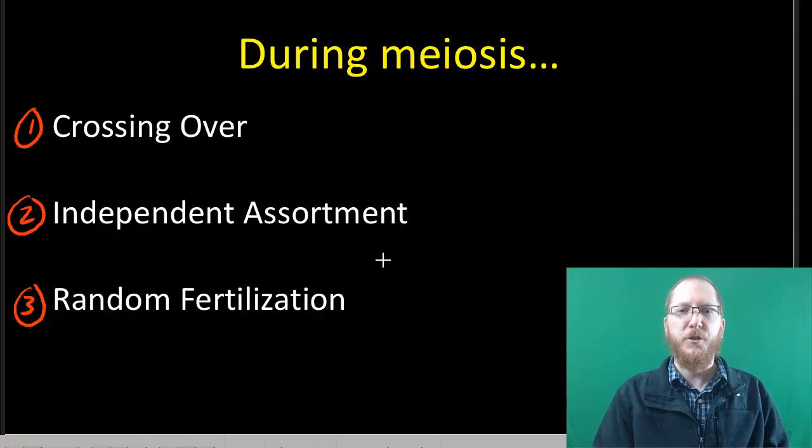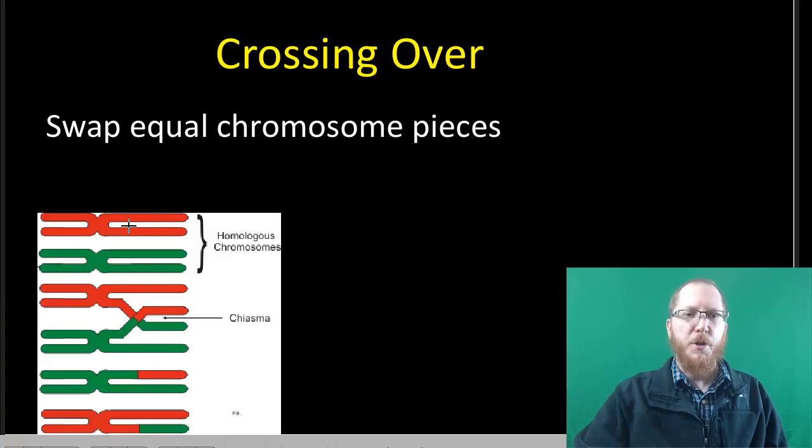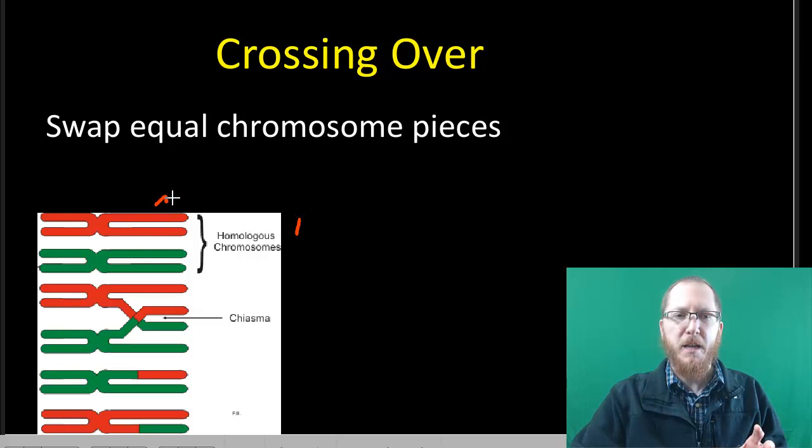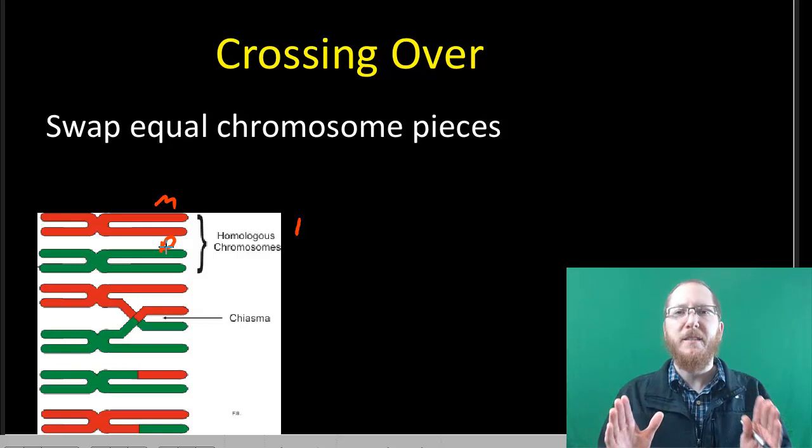Starting off, we can cover first the idea of crossing over. So what we're going to do here is when you line up those two homologues, so this could be essentially like chromosome 1, and you have mom's version and you've got dad's version. And so these chromosomes have the same overall genes on them. They're pretty much equivalent.